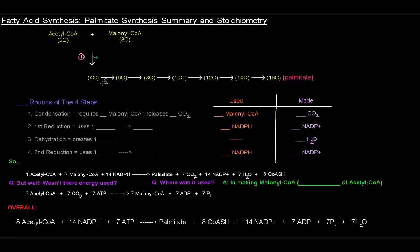There's one, two, three, four, five, six, seven rounds before we create a 16-carbon molecule, palmitate. That's seven rounds of the four steps.